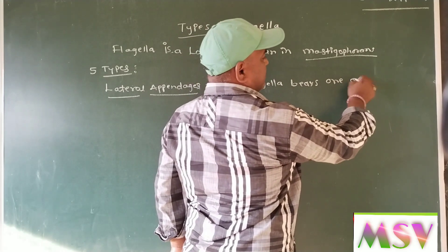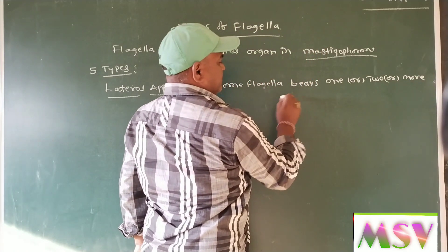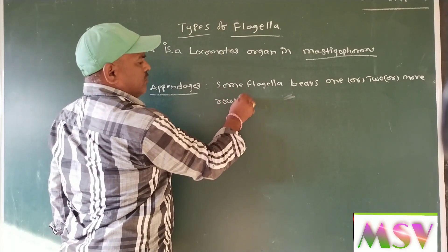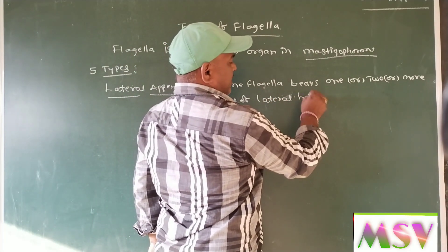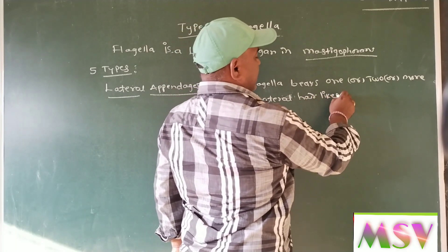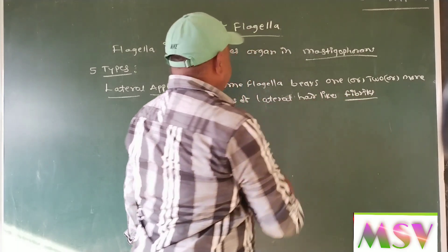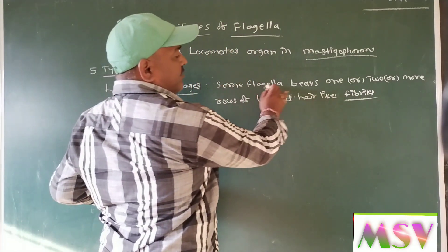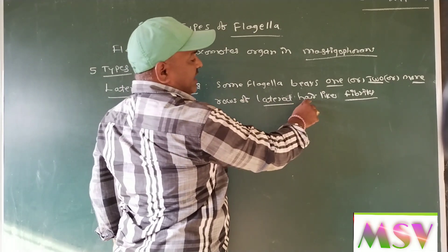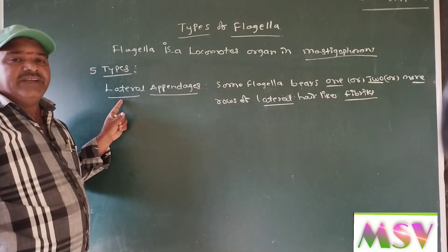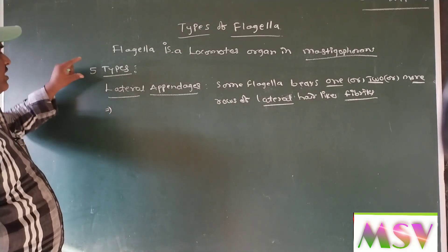Some flagella bear one or two or more rows of lateral hair-like fibrils. They are called as lateral appendages. The arrangement of the lateral appendages in the flagella divides them into five types.